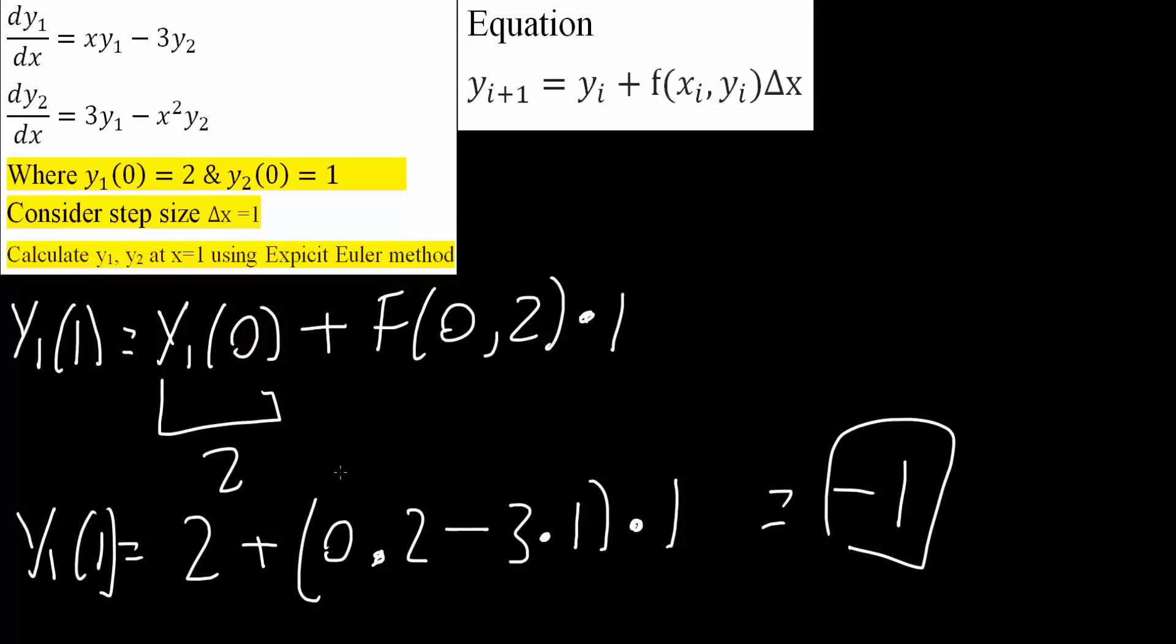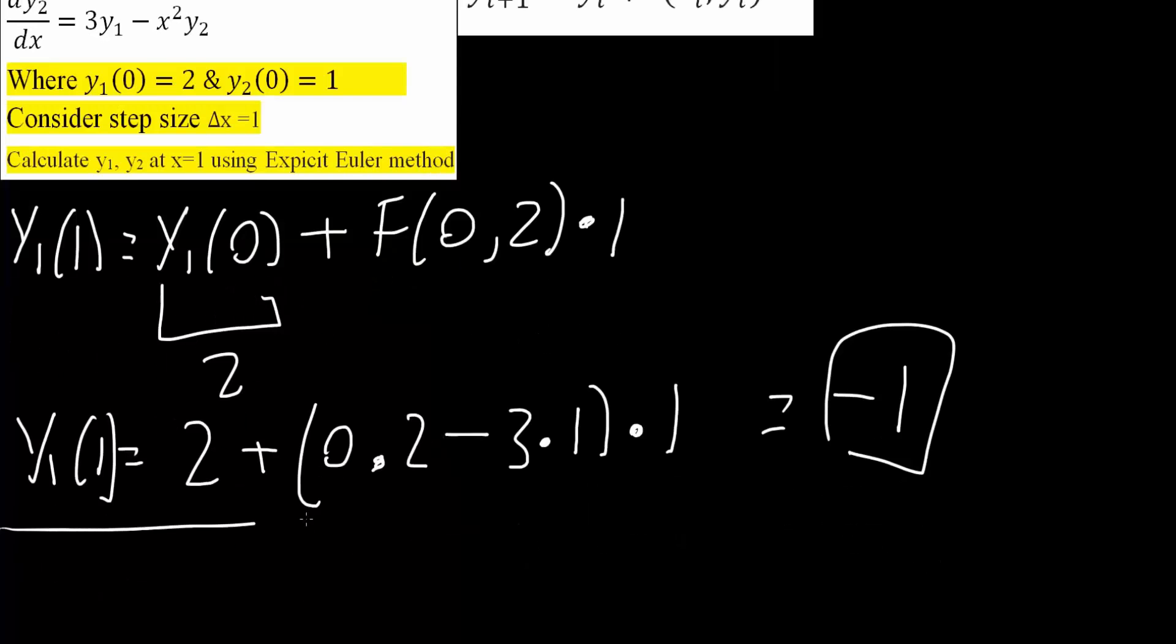And now we will do y2. So same idea. So if you want, you can even pause the video here and attempt to solve this problem. So let's get started. We'll get y2(1), and that's going to equal y2(0), plus f, x was 0 for both of these, so 0, comma, when x is 0, y2 would be 1.